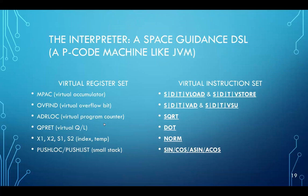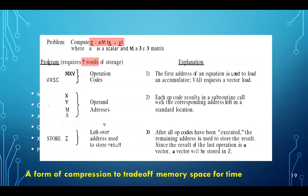Another very interesting thing about the computer that's worth mentioning as part of its architecture was the interpreter, which the way to think about that was essentially a space guidance domain specific language. It's a P code machine like a Java virtual machine. It had its own virtual register set and its own virtual instruction set, which included single, double, triple precision vectors, loads and stores, vectors, vector adds and subtracts, square roots dot products, normalizations, transcendental functions. So the reason that they had to implement this was it gave them a huge form of compression because the only memory they had to work with was either the 2K of erasable memory or the 36K words of fixed memory. So everything they did had to fit into that memory. So this gives you an example of interpreter code to compute the following expression up there in red, which is a vector Z equals a scalar A times a matrix M times the sum of two additional vectors X and Y. And that turned out to take seven words of fixed memory and the actual instructions are there as well.